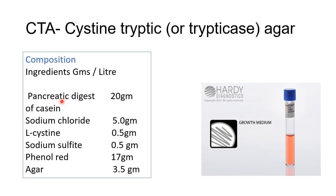Carbohydrate fermentation is detected by a visible color change in the media due to the pH indicator phenol red. When organic acids are produced and the media becomes acidified, the acid from carbohydrate fermentation decreases the pH, causing a color shift from red to pink to yellow. However, peptones present in the media are also degraded by bacteria, yielding alkaline substances.